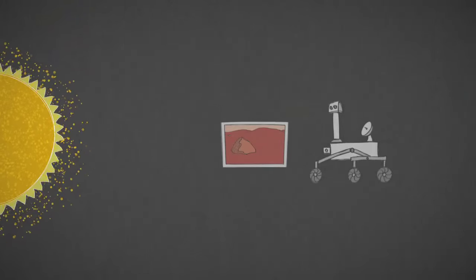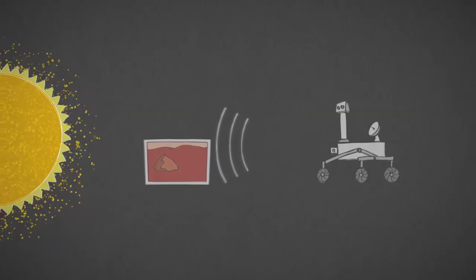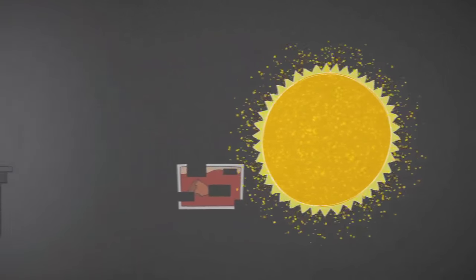If our spacecraft send back signals, charged particles from the Sun could interfere, causing gaps in the data that reach us.